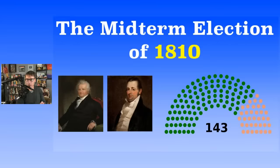Henry Clay would be Speaker of the House on and off in the following years. Of the 142 seats in the House, the Democratic-Republicans had 107 after this, and the Federalists only had 36 — losing 12 seats since the 1808 elections. So it was back and forth.